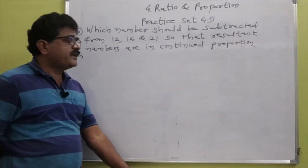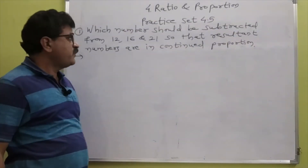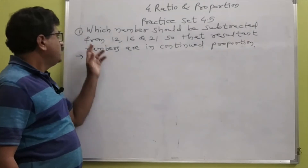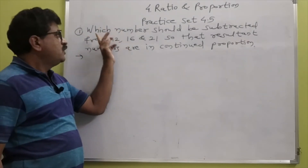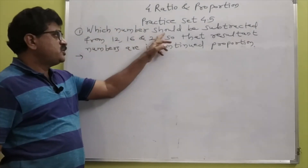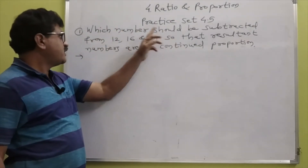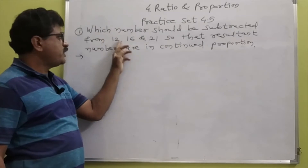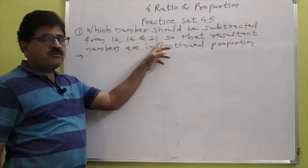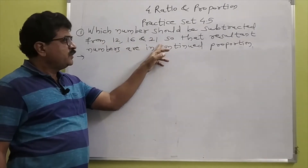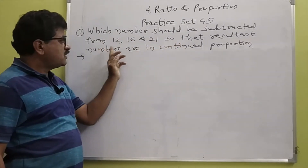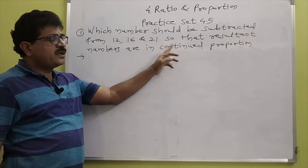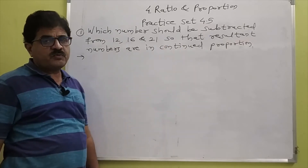Practice exercise 4.5, Question number 1. Which number should be subtracted from 12, 16 and 21 so that the resultant numbers are in continued proportion?